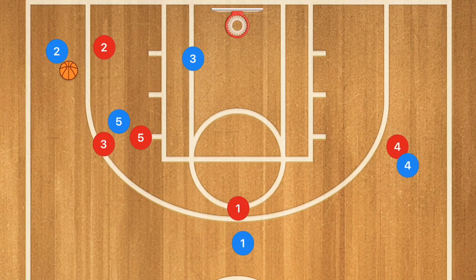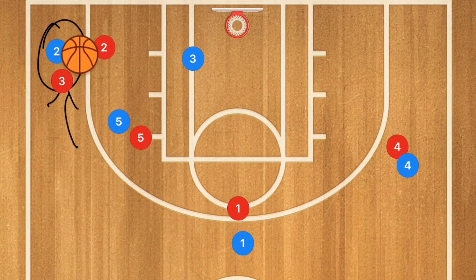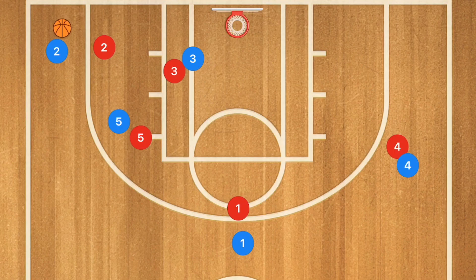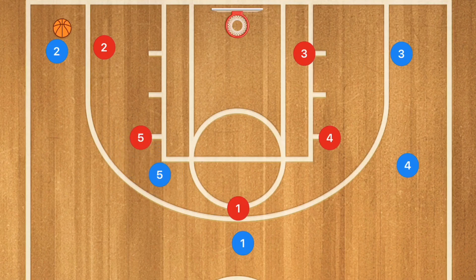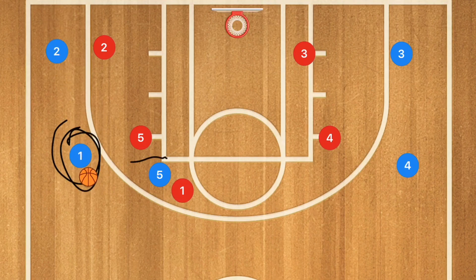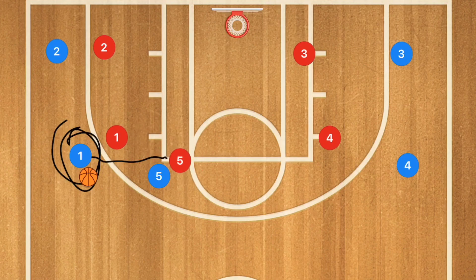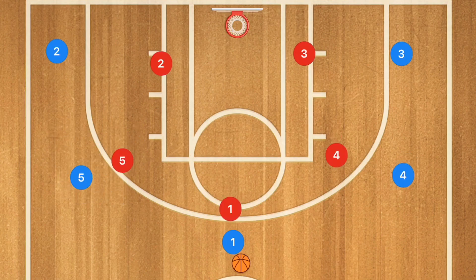If player 3 is open after the cut, hit him up. If the defense tried to trap off that screen, player 3 will be open for the layup. If player 3 is not open, he continues out to the opposite side. Player 5 then pops out, sets a screen for player 1, and player 1 shows toward the free throw line extended. Player 5 pops to the top, or if there was a fight-through he turns and sets another screen — and now we are back in the 5-out.